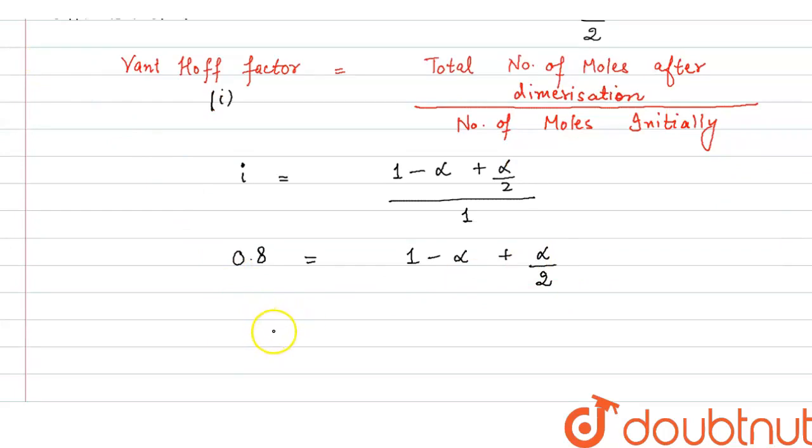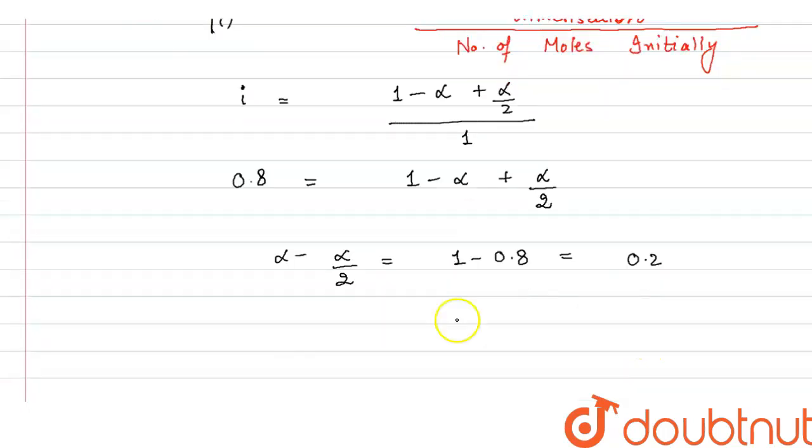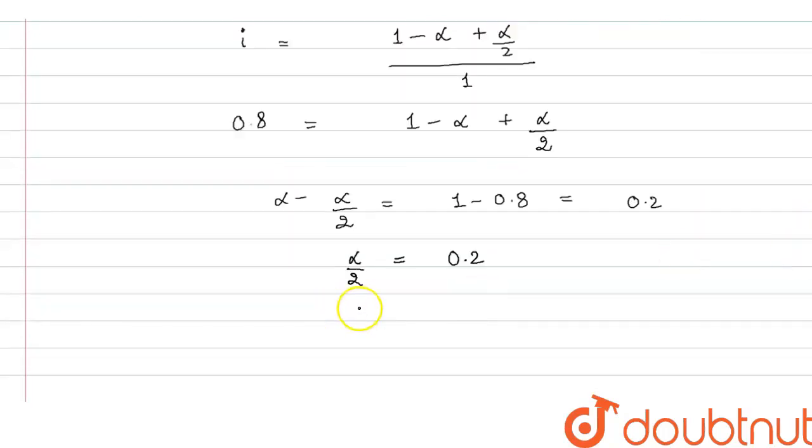From here we get alpha minus alpha by 2 will be equal to 1 minus 0.8, which will be equal to 0.2. So from here, alpha minus alpha by 2 is alpha by 2, which will be equal to 0.2, and alpha is equal to 0.4.